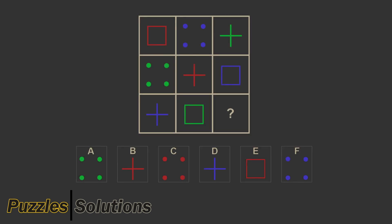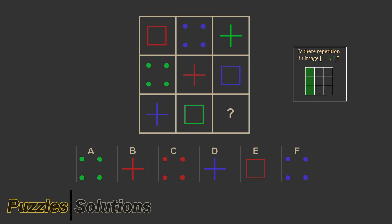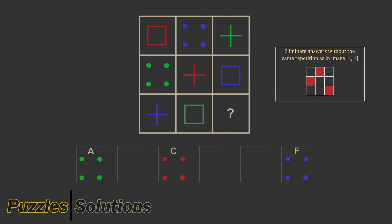Let's go through a practical example. First, is there any repetition in the first row? No — so we move down and look at the columns. Is there any repetition in the first column? No — so we move to the top right to bottom left diagonals. Is there any repetition in image 168? Yes, we can see repetition of squares, so the type of repetition is repetition of shape. Do we have repetition of shapes in image 357? Yes, we have repetition of a plus sign. And in image 24? Yes, repetition of 4 dots. So we eliminate any answer that doesn't have 4 dots, leaving only answers A, C, and F.